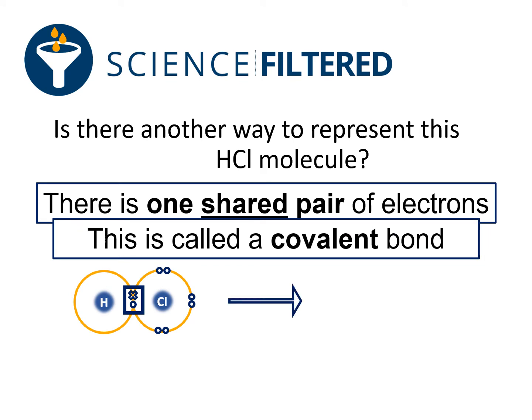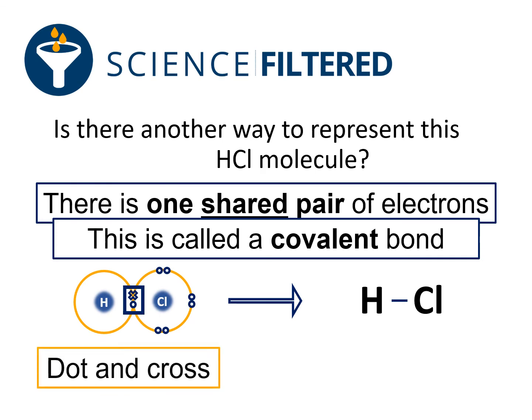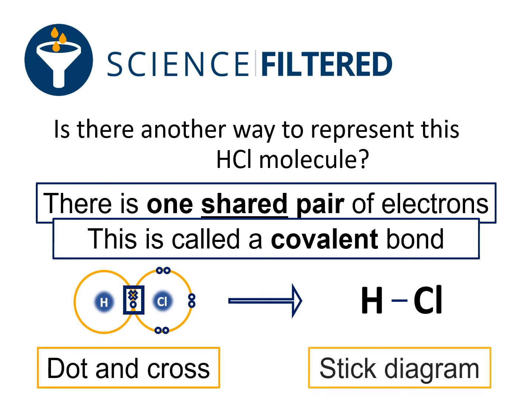A simplified way of drawing this molecule is to have one H, one Cl, and a line in the middle to represent that covalent bond. So you've got your dot and cross diagram on the left, and you've got your simple stick diagram on the right, showing only that covalent bond, which is represented by that stick.